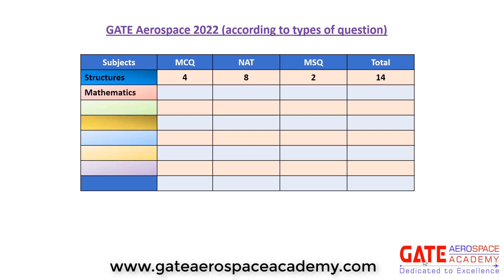In mathematics, total 6 MCQ, 3 NAT and 2 MSQ, so total number of questions in mathematics were 11. In propulsion, 2 MCQ, 4 NAT questions and 2 MSQ type, so total 8 questions were there from propulsion.